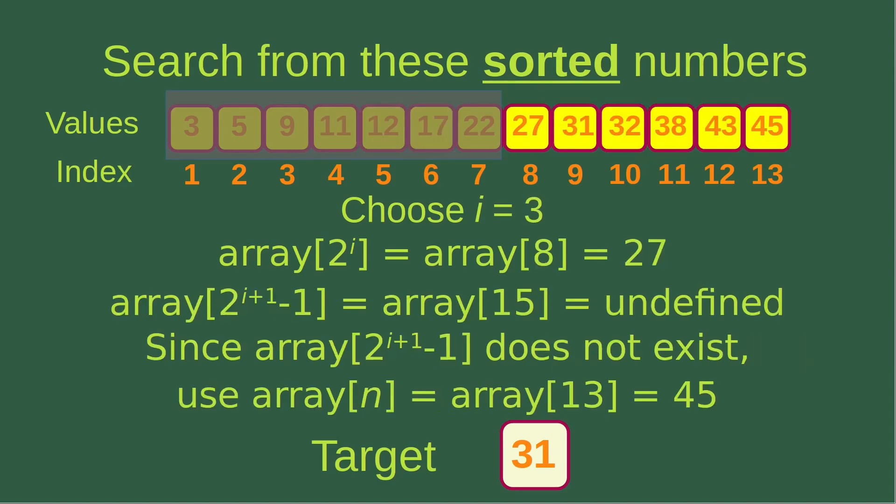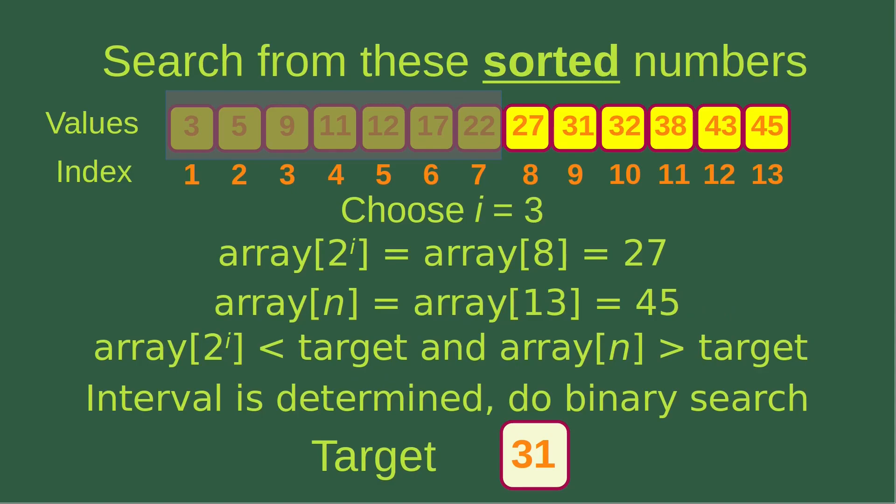That means we have to increment i. Now i becomes 3, and we have to check whether the interval corresponding to those two indices can contain the target. The leftmost element in that portion is 27, which corresponds to the eighth element of the array. When we use the given formula to find the rightmost element, we find it corresponds to index 15, which is not present in our array. Since the array element doesn't exist, we use the value of n, so array[n] corresponds to array[13], which is 35. Since we already know the two numbers can contain the target, the interval is determined, and we can do the binary search on that interval.